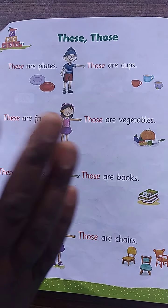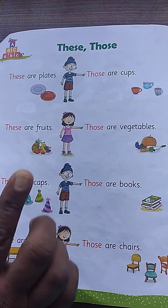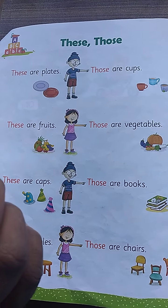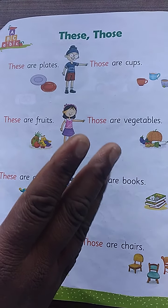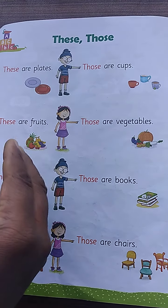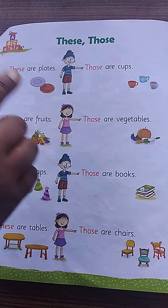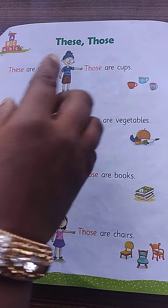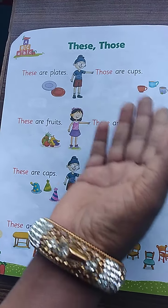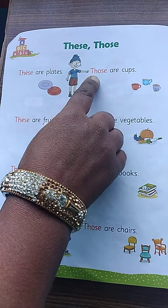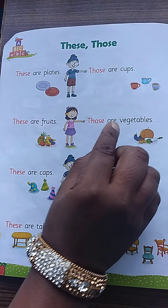In singular — means one — if things is one and near, we use this. When things are far from us, we use that. Same way, when things are here and more than one, we use these. When things are far from us and more than one, we use those.